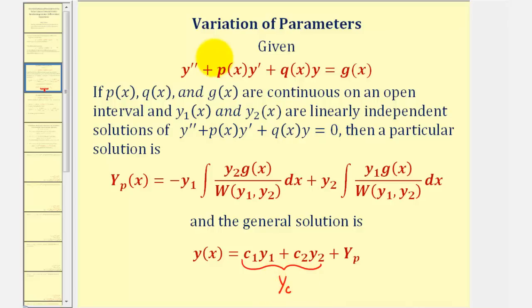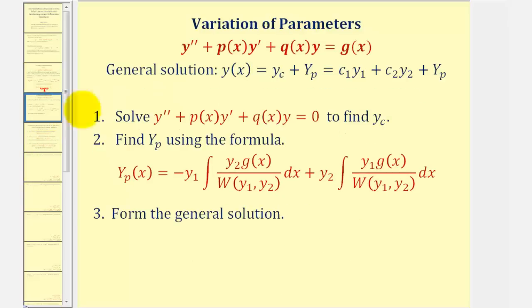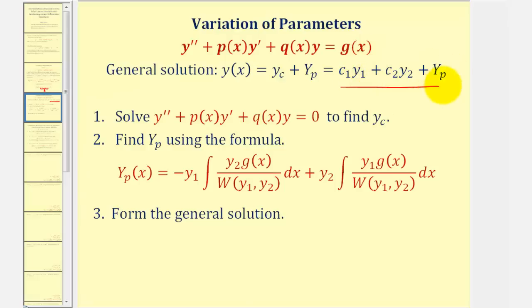To apply the method of variation of parameters, we'll take three steps. Step one: solve the corresponding homogeneous differential equation, which gives us y sub c, or the first two terms of the general solution. Step two: use the formula to find y sub p, which we derived in a previous lesson. Step three: use the results of steps one and two to form the general solution. Let's take a look at our example.